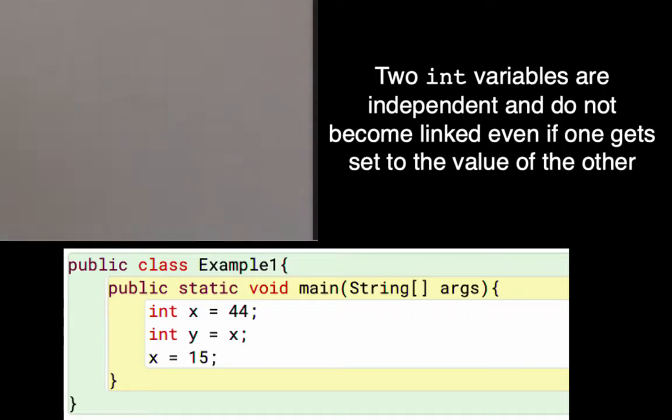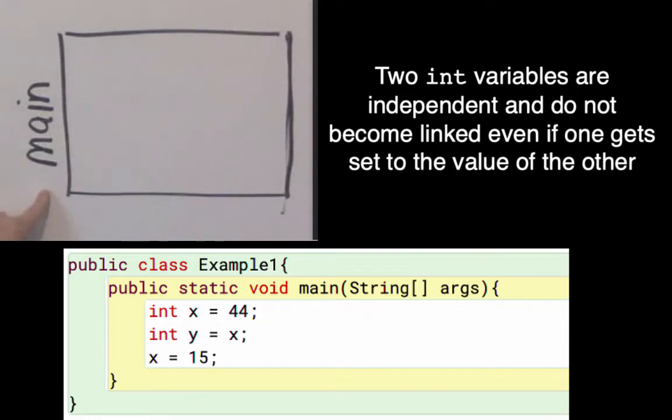Whenever we run our class, we run the method public static void main string square bracket args. I'll draw a stack frame to keep track of my local variables and I'll write the name of the method on the side of it.